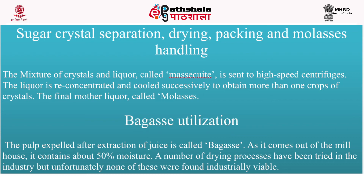For sugar crystal separation, the mixture of crystals and liquor called massecuite is sent to a high-speed centrifuge. The liquor is re-concentrated and cooled successively to obtain more than one crop of crystals. The final mother liquor — called molasses, which is still rich in sugar content — is sent to steel storage tanks and sold to distilleries. The separated crystals are dried, graded, and finally bagged and stored in godowns.